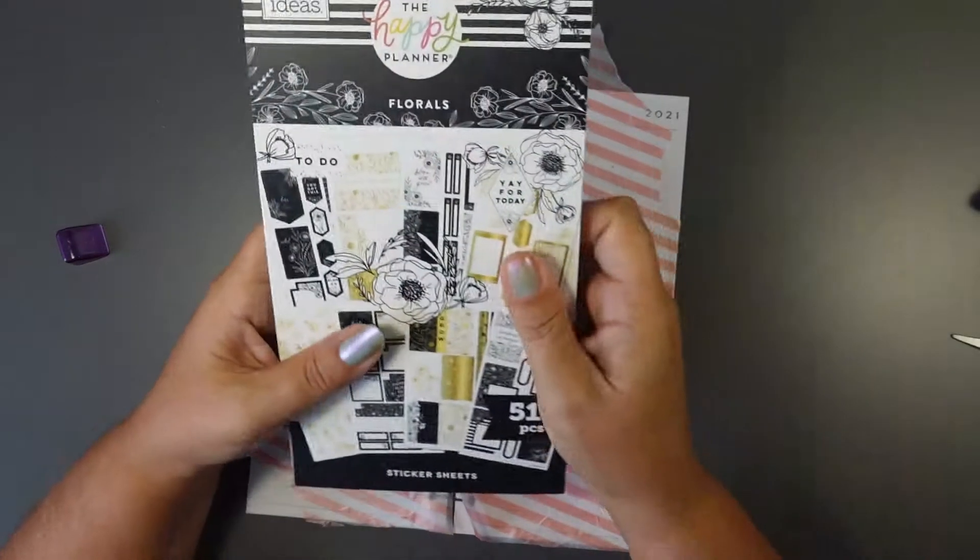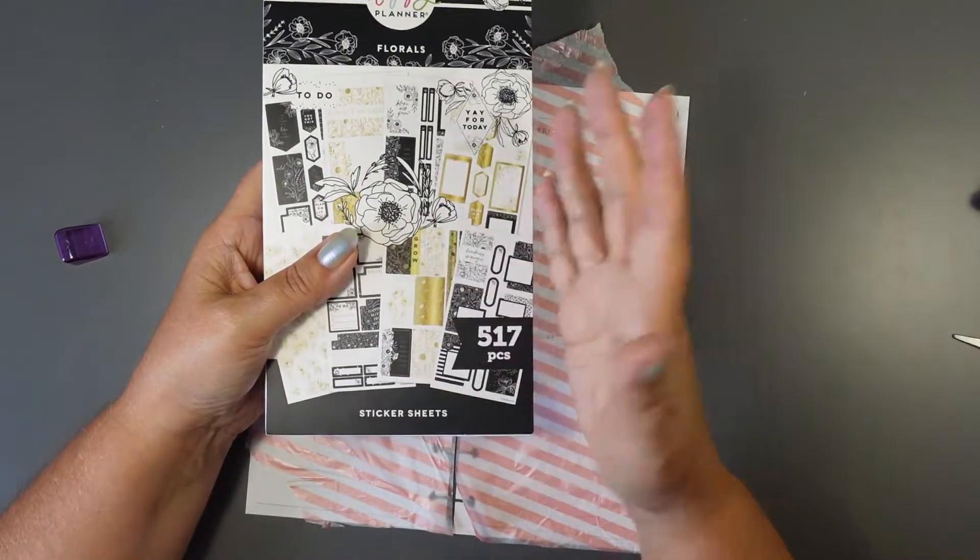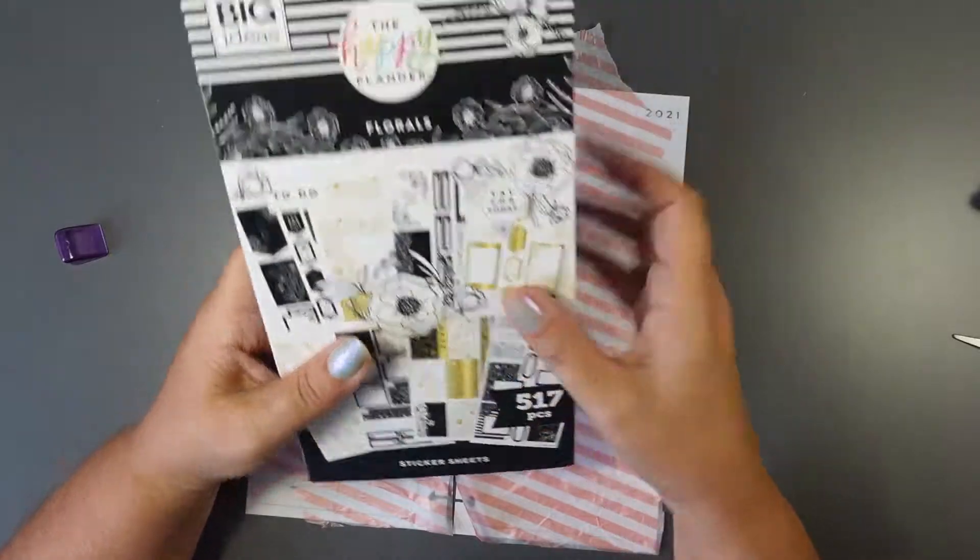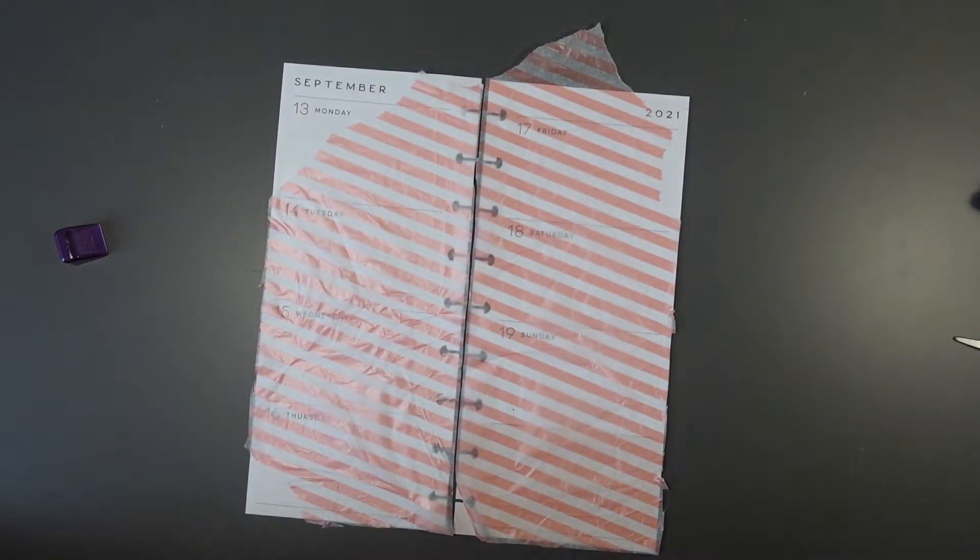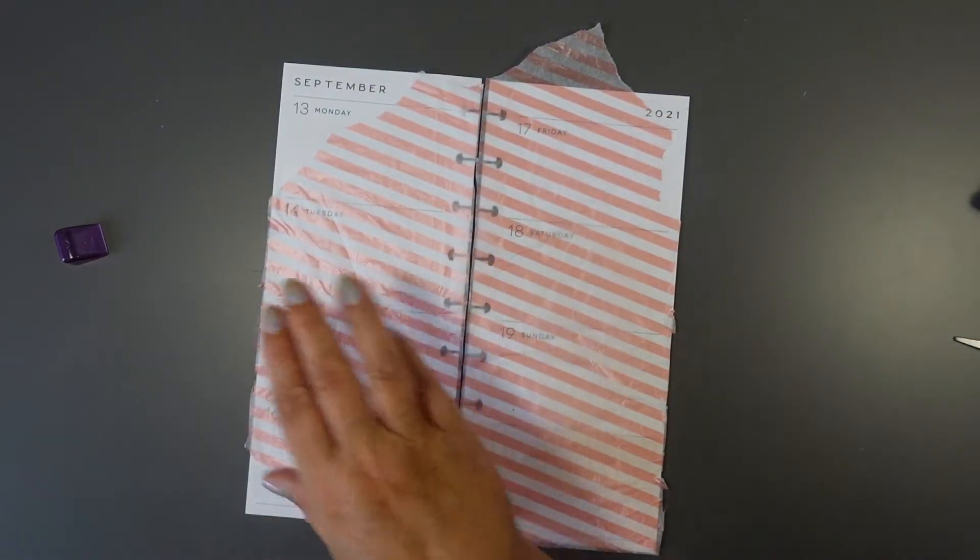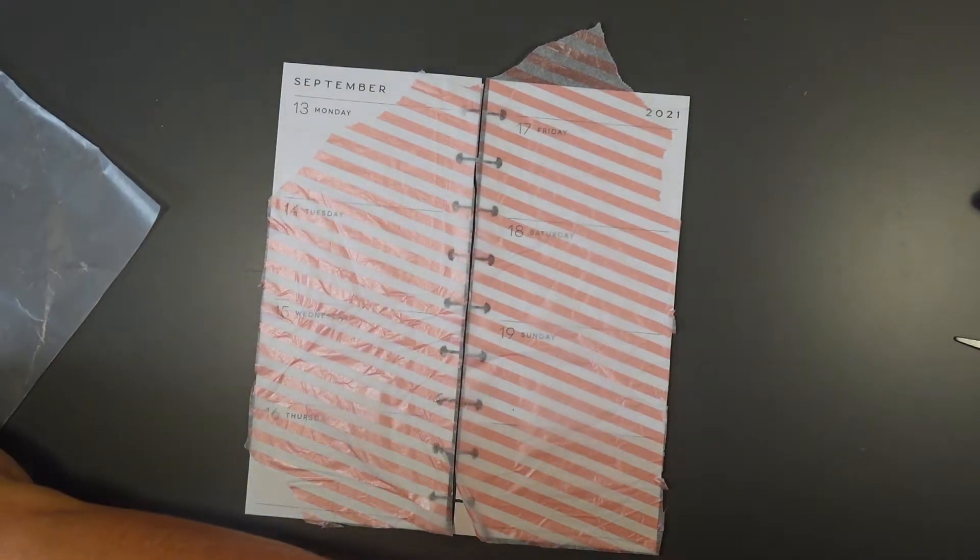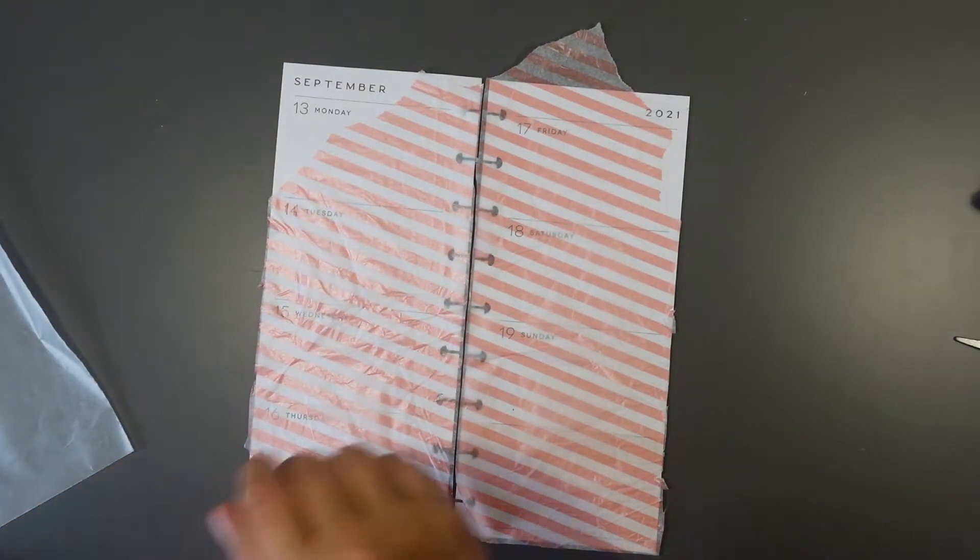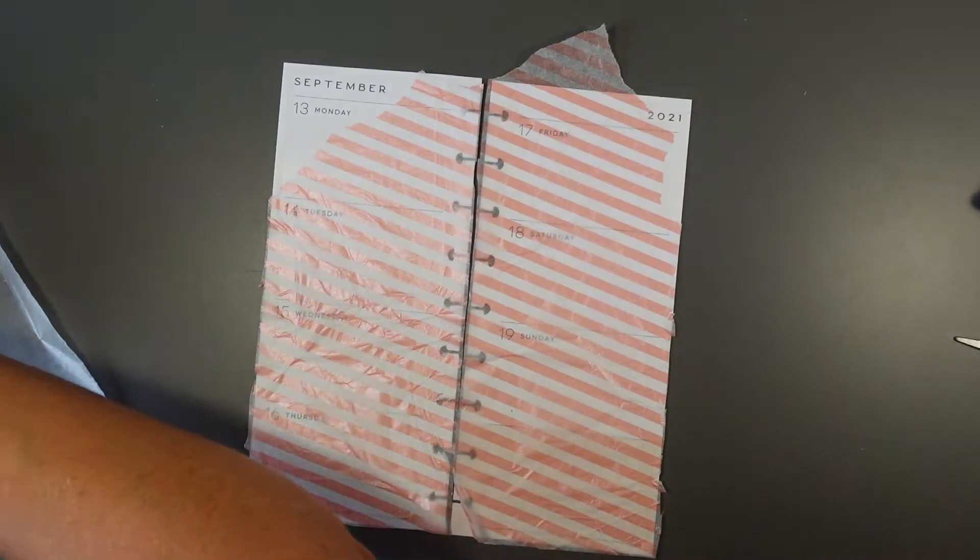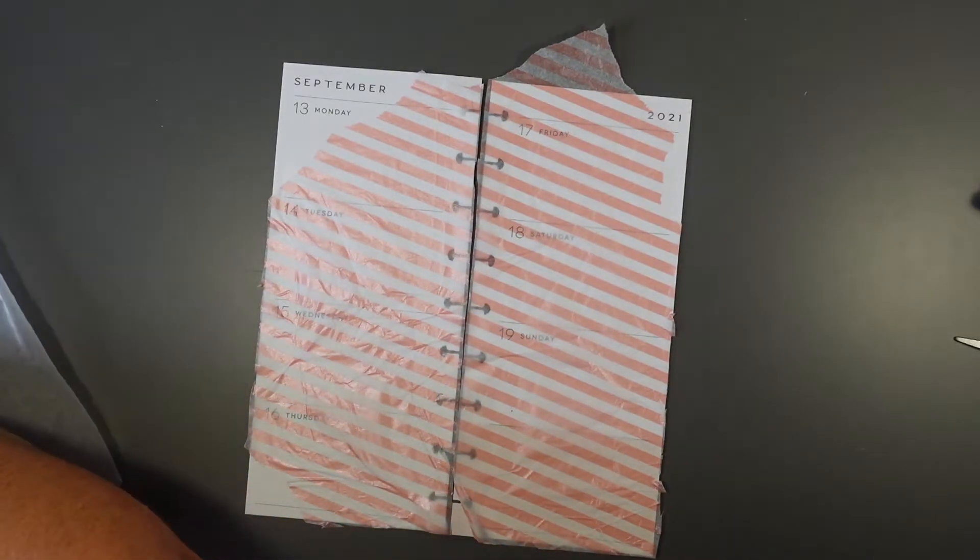Now, I have used this one. I think it's the Bloom Selection Florals. And because it's my skinny, all I'm doing is just marking important dates, and leaving myself some little spaces to write. But other than that, just making it look pretty.